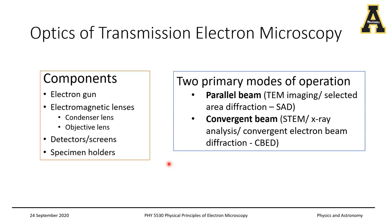If you look at the general components of the transmission electron microscope, you will still find an electron gun, because that's your emitter. There will be electromagnetic lenses, which also includes a condenser lens or maybe an array of condenser lenses, and also multiple objective lenses. There are detectors of course, and also you will have a specimen holder which is very different from a scanning electron microscope sample holder, and we will see what the differences are.